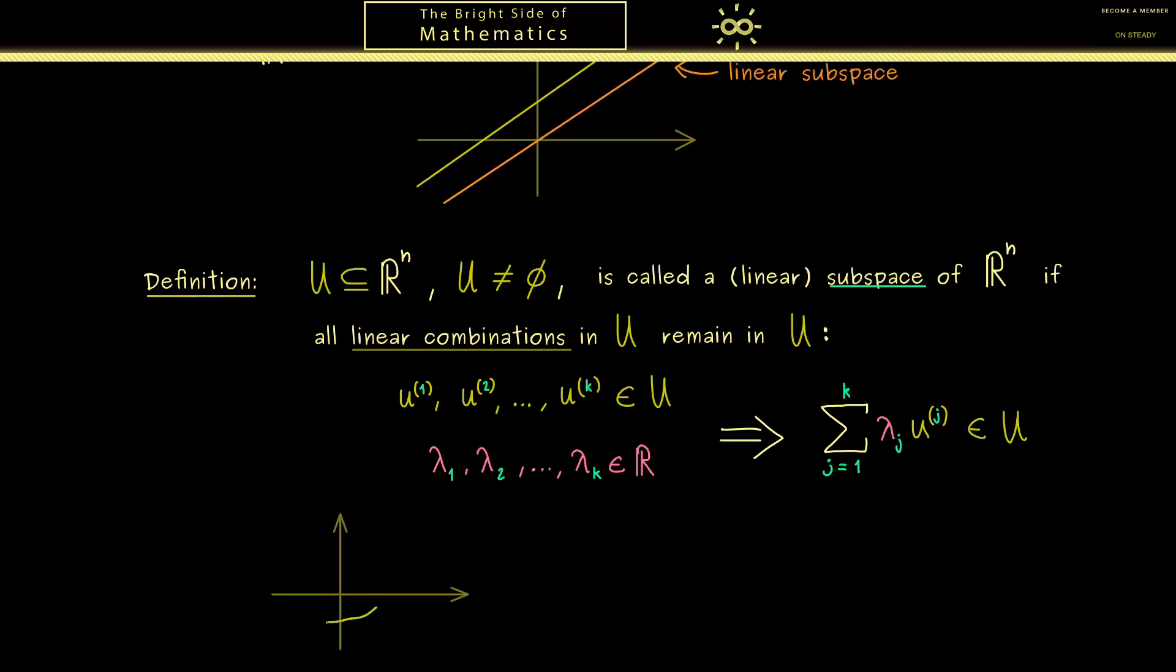So maybe visualize this subset here in the plane. Indeed here you should immediately see when we take a vector u like this one, then we could scale this vector and we see that we can leave the set U. Obviously this point here is not an element in the set U.